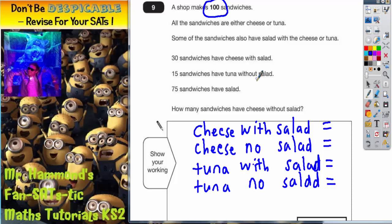So what can we fill in straight away? Well, 30 sandwiches, cheese with salad. So this top one here is going to be 30. 30 sandwiches, cheese with salad. That's that clue done.